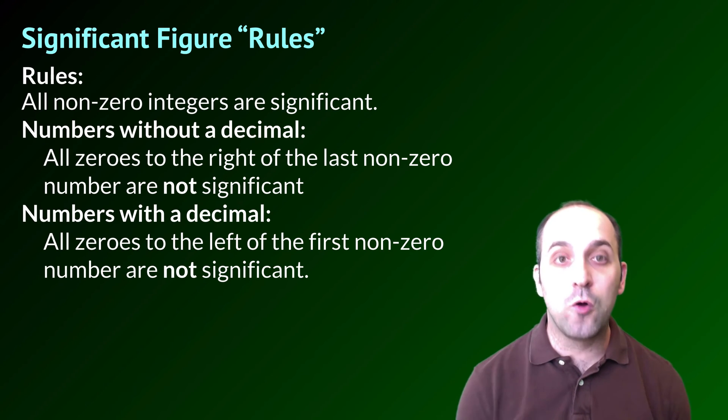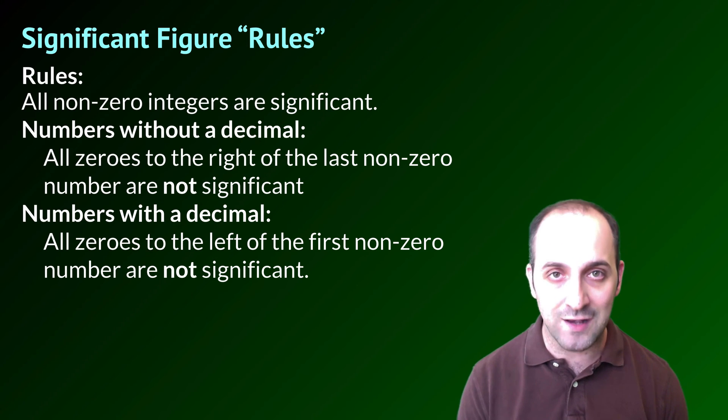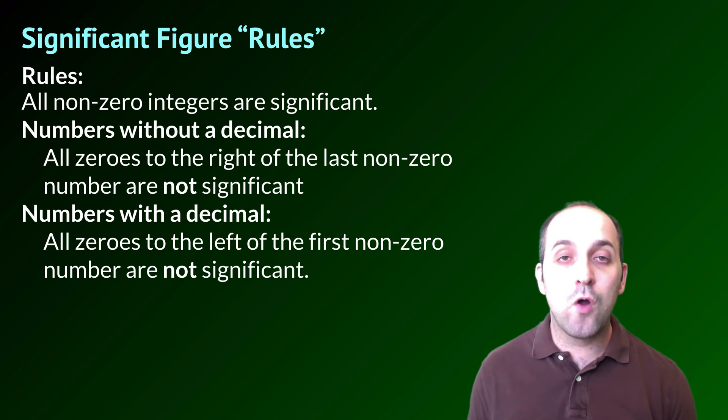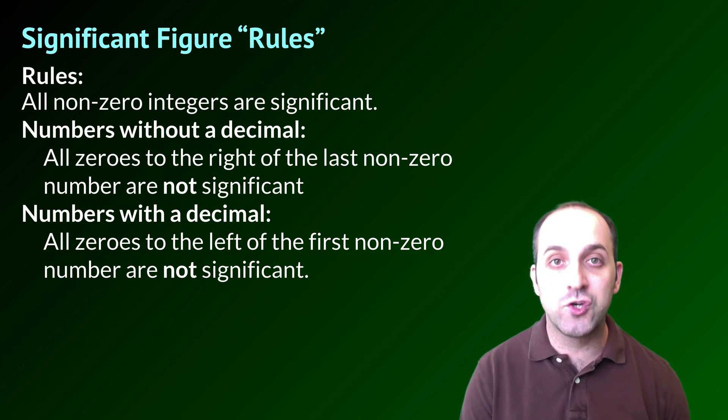For numbers with a decimal, all zeros to the left of the first non-zero number are not significant. In both of these cases, these zeros are just acting as placeholders to help determine the magnitude of our number, and as such, they should not be counted as significant figures or numbers known with any certainty in our measurement.